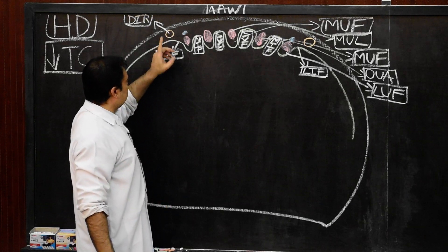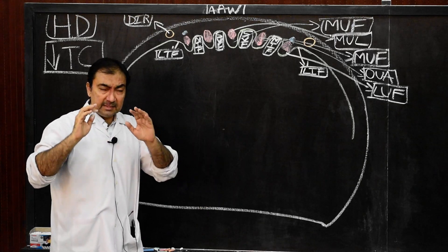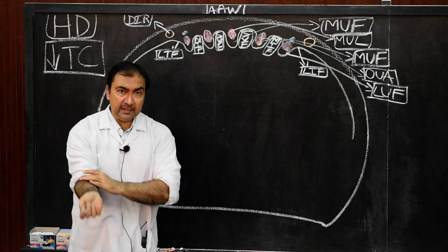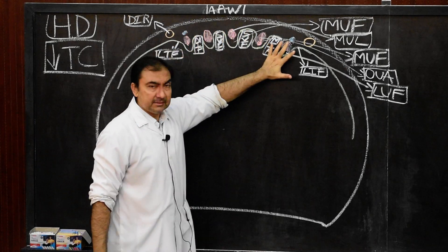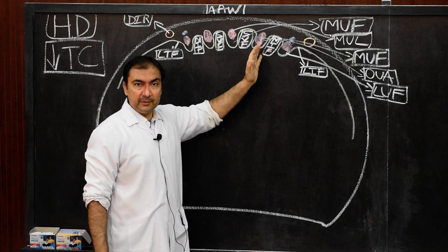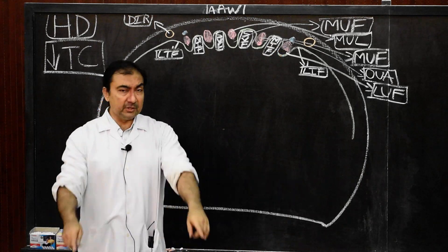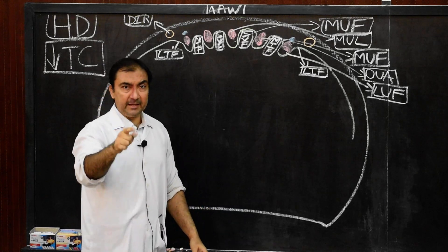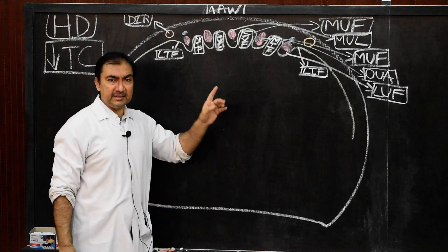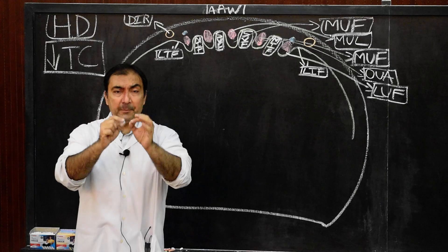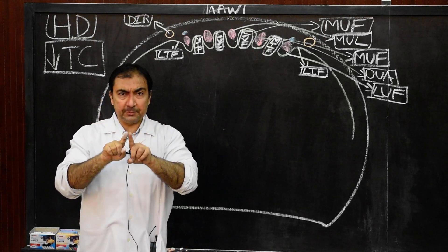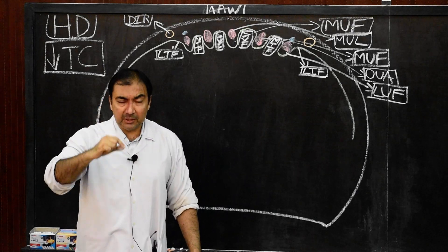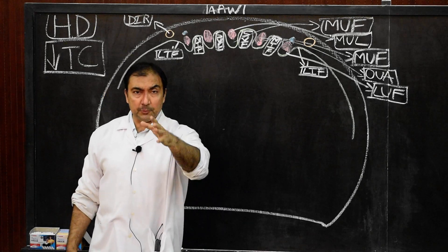The lateral inguinal fossa is present in front of the deep inguinal ring. The deep inguinal ring is an oval-shaped opening in the fascia transversalis, 1.25 cm above the mid inguinal point. The mid inguinal point is the midpoint between the anterior superior iliac spine and pubic symphysis.